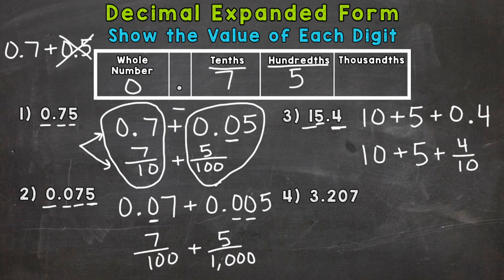On to number four, we have three and two hundred seven thousandths. So we start with the three here, which has a value of three, because it's in the ones place. So three, plus the value of this two, which is two tenths.